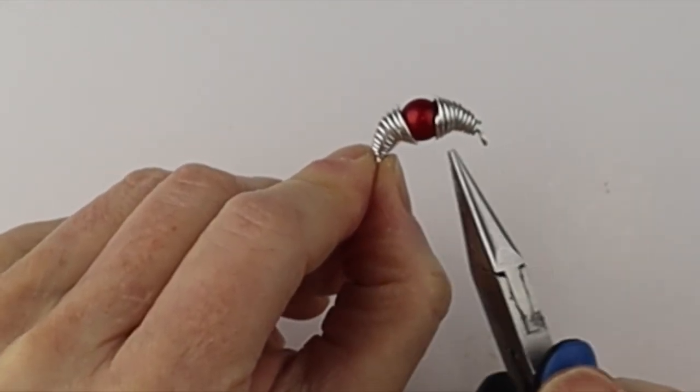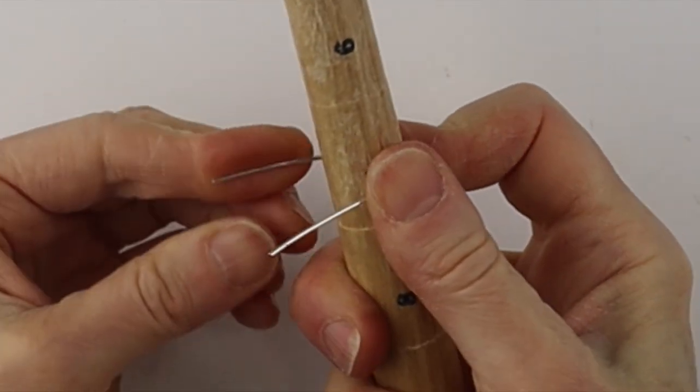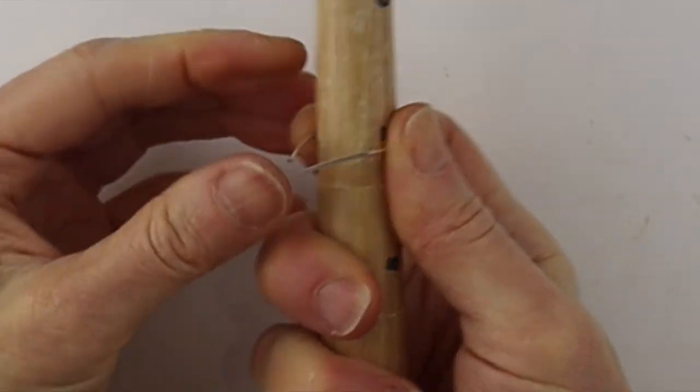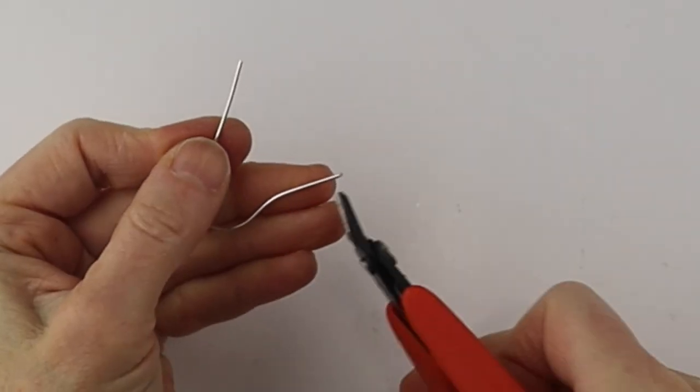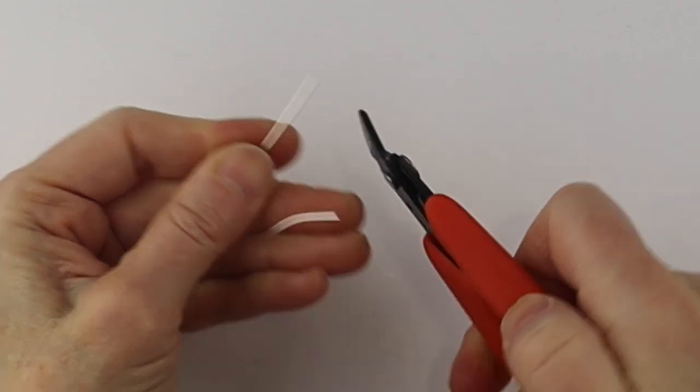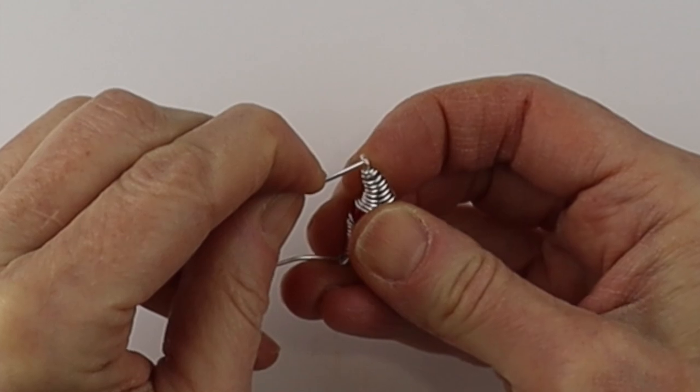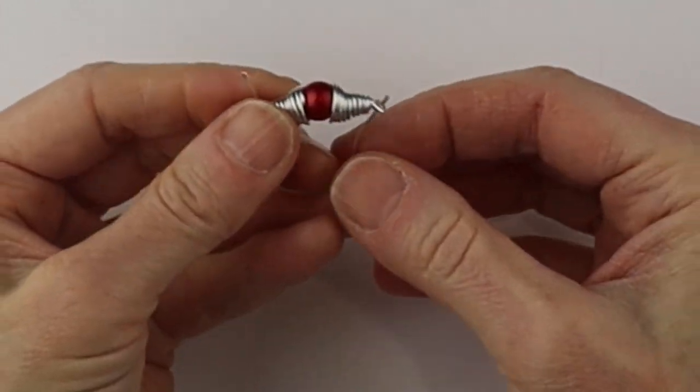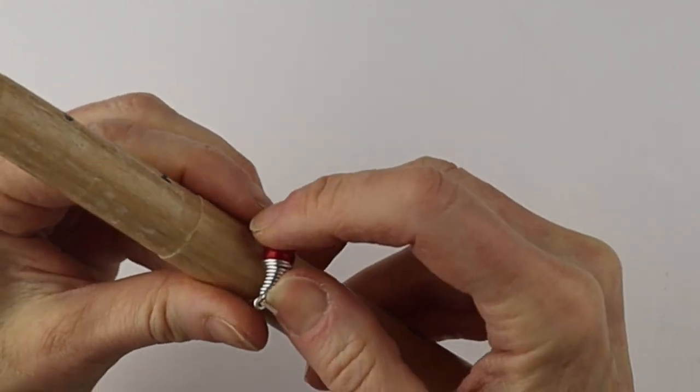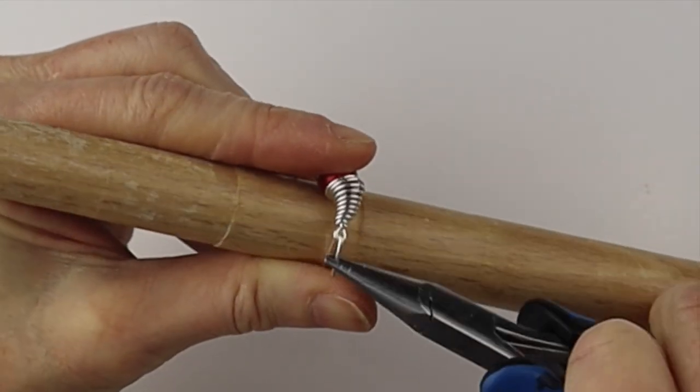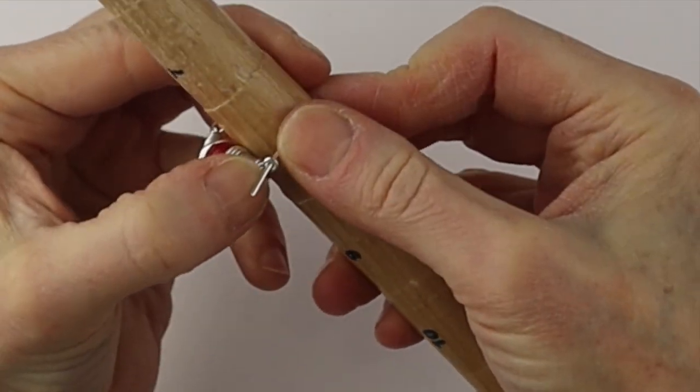So once you have it at a nice curve we're going to get a piece of 18 gauge wire and turn it around the ring mandrel. Bend the ends a little bit. Clip the ends a little bit shorter and then we're going to slide the coiled piece onto the ring band. Slide it on the mandrel. Put it to the size you want. Grab the ends and turn them back to hold that in place.